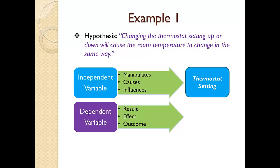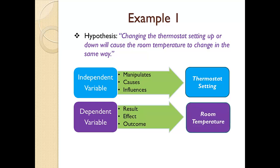Now let's figure out the dependent variable. What is the thing that is seeing the result, effect, or outcome of changing the thermostat setting — our independent variable? Based upon the way my hypothesis is worded, room temperature is being impacted. Therefore, it is my dependent variable. Simple enough, right? Okay, let's try another one.